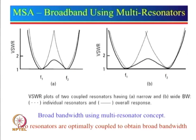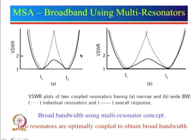The concept of a multi-resonator is used to obtain broad bandwidth. For example, let us say this is the VSWR curve for one antenna resonating at F1. If we excite another antenna resonating at frequency F2 and do so in a proper way, the overall curve will be a much broader curve, and the VSWR less than or equal to 2 bandwidth will be much more than a single patch. One can see that a single patch has this much bandwidth, another single patch has this bandwidth, but the overall bandwidth is more than the bandwidth of the individual patches.